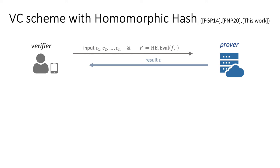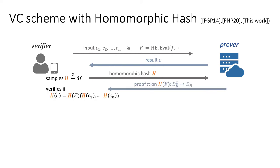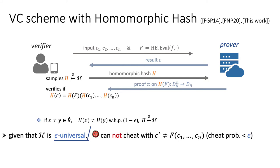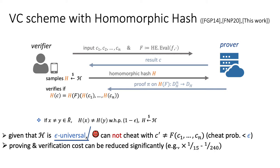With this idea on a homomorphic hash, we can describe our VC on encrypted data. After a prover or server gives back the result, a verifier or client samples a hash from the family of hashes, then sends it to the prover. The prover provides a proof on this image of the hash on the ciphertext computation. Finally, the verifier can verify this image, then confirms whether the result is correct, according to this verification. Given that the hash is sampled from an epsilon-universal hash family, the success probability of an adversary in cheating is less than epsilon. Also, the cost of VC can be reduced significantly, as we checked with our instantiation.